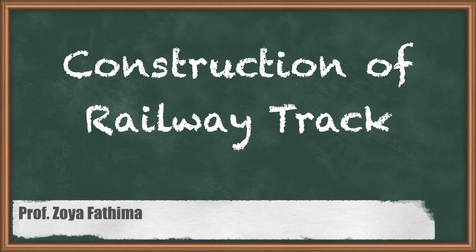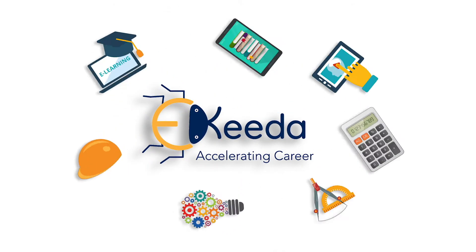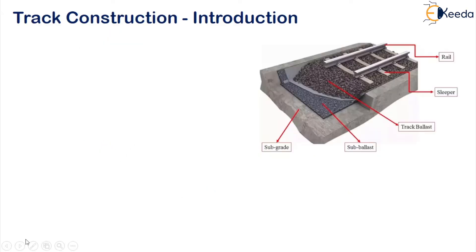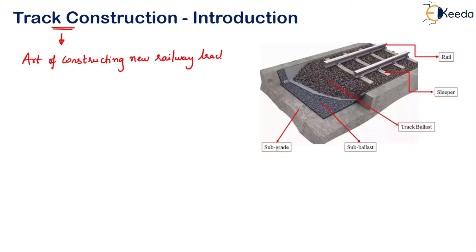In this lesson we will study about track construction — what exactly it is and the different steps involved. The art of constructing a new railway track is track construction. As we know, the railway track involves components such as rails, sleepers, track ballast, sub-ballast, subgrade, along with fasteners and fixtures. Track construction is divided into three stages.